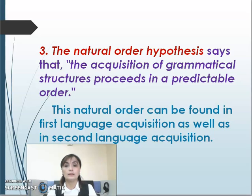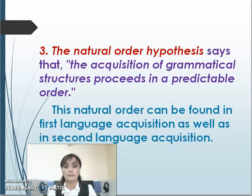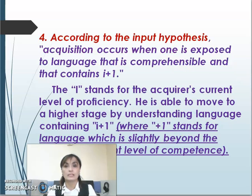The third one, the natural order hypothesis, states that the acquisition of grammatical structures proceeds in a predictable order. This natural order can be found in first language acquisition as well as in second language acquisition.